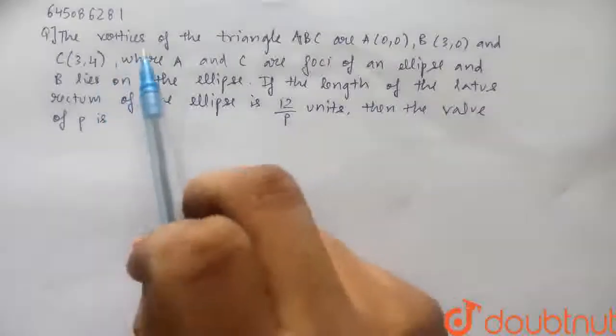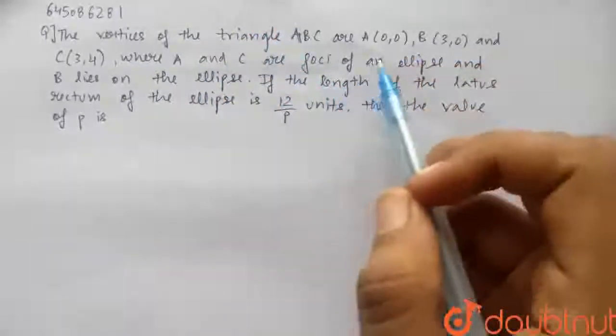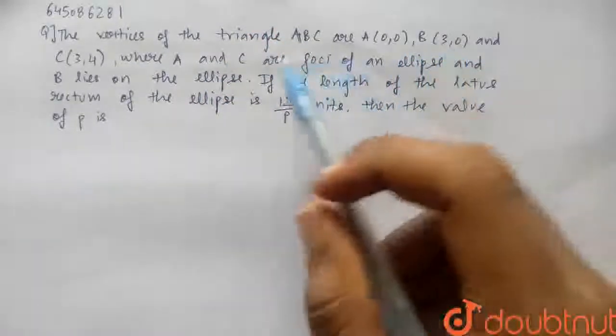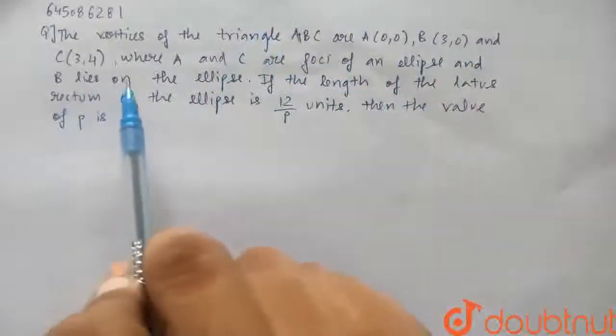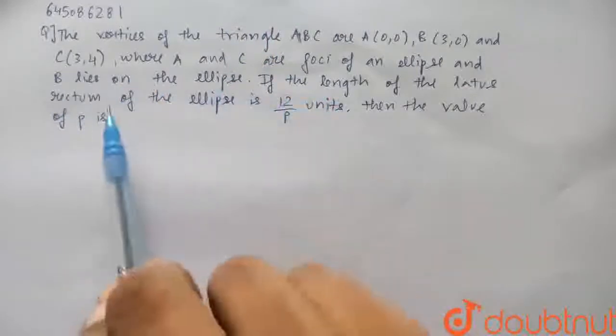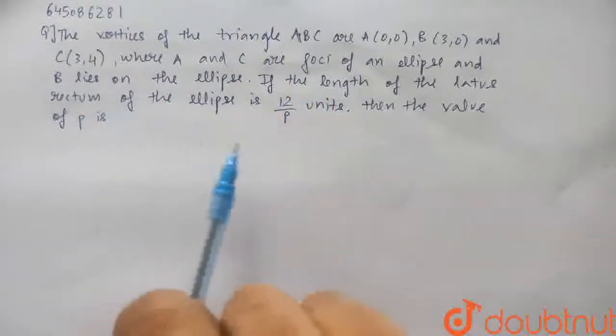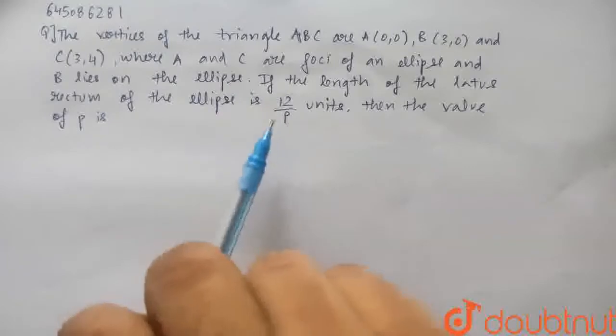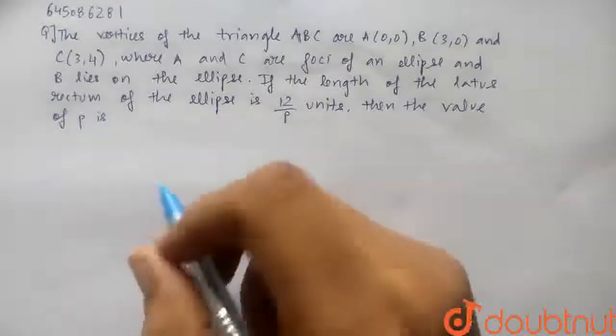Hello students, so the question for today is: the vertices of the triangle ABC are A(0,0), B(3,0) and C(3,4) where A and C are the foci of an ellipse and B lies on the ellipse. If the length of the latus rectum of the ellipse is given as 12/P units, we have to find the value of P.